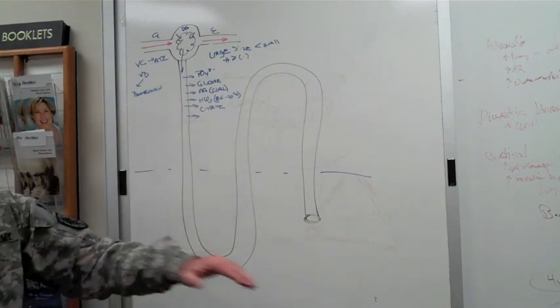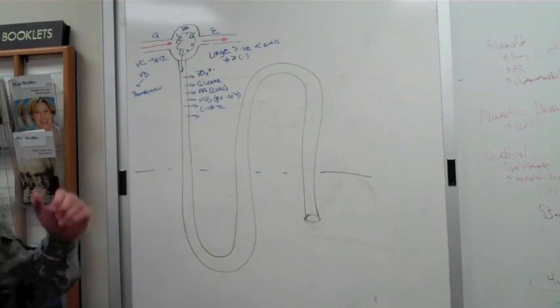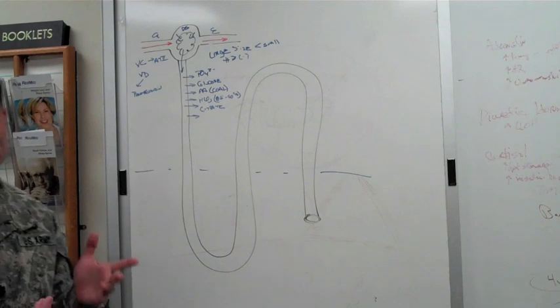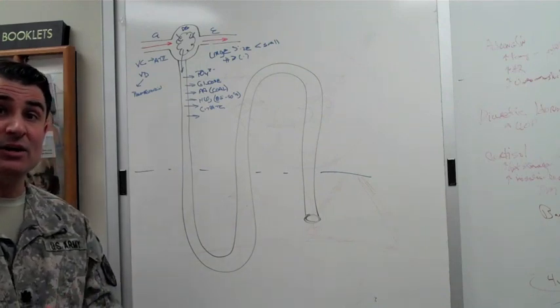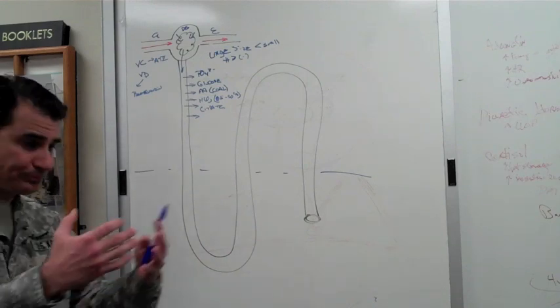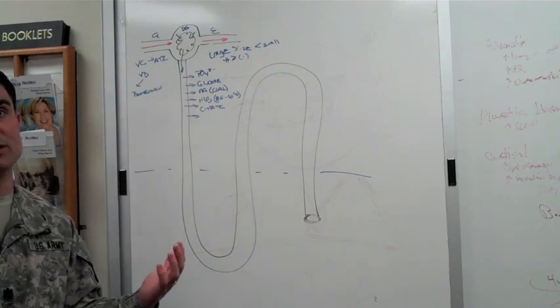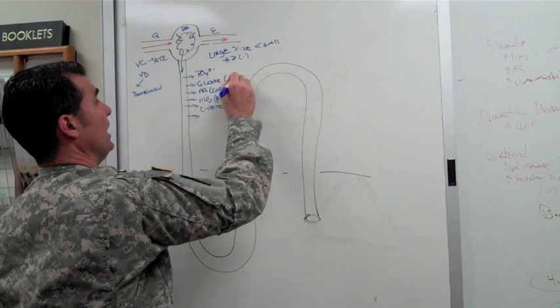Glucose gets freely filtered, comes down, and gets reabsorbed in the proximal tubule only. Glucose is something you guys are familiar with because if somebody has diabetes, what ends up happening is they can't metabolize their glucose in a proper manner to be utilized by the cell, so it builds up in the serum. The renal threshold for glucose is around 150 to 200.